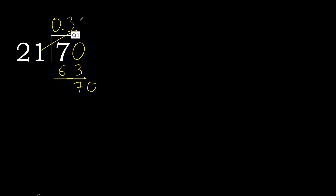70 again. 21 multiplied by 3 is 63. Subtract.